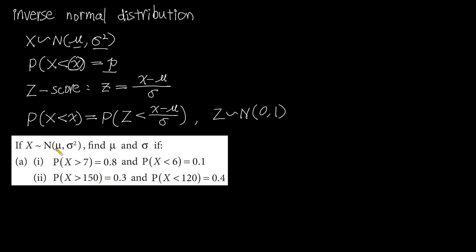Let's see an example. X follows a normal distribution with mean mu and variance. The problem asks us to find mu and the standard deviation given two conditions: the probability that x is bigger than 7 equals 0.8, and the probability that x is smaller than 6 equals 0.1. Given these probabilities and corresponding x values, how do we find mu and the standard deviation?